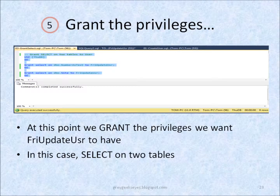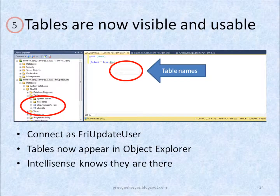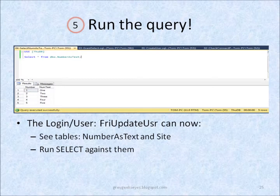Finally, I grant the privileges that I actually want Friday Update User to have. In this case, I'm granting Select on two tables. If I now create a new SQL statement window and enter a Select statement, the IntelliSense is aware that the tables are there. They are visible in Object Explorer as well. And when I run the query, I can get through to the tables and display the results.